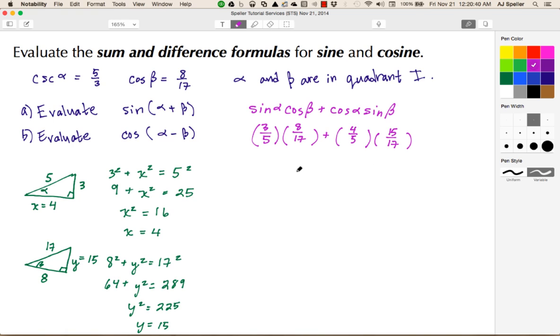Now we multiply and evaluate. 3 times 8 is 24, and I'll keep my denominator as 5 times 17. Plus 4 times 15 is 60, over 5 times 17. Now 24 plus 60 equals 84, and 5 times 17 equals 85. So my answer is 84/85, and this is for part A.